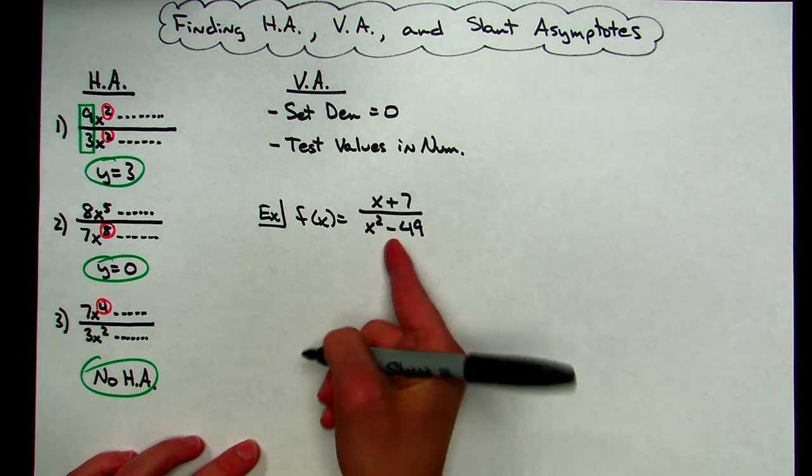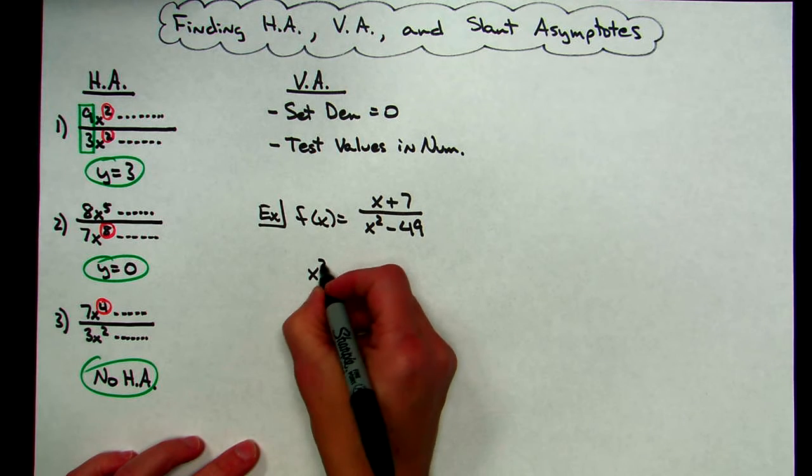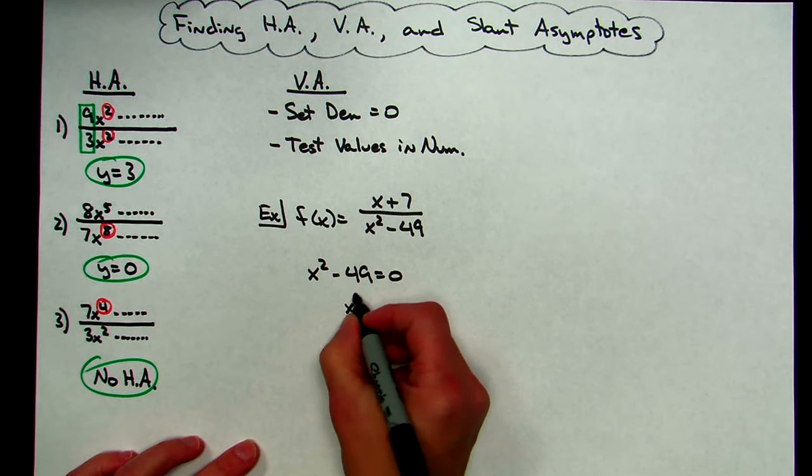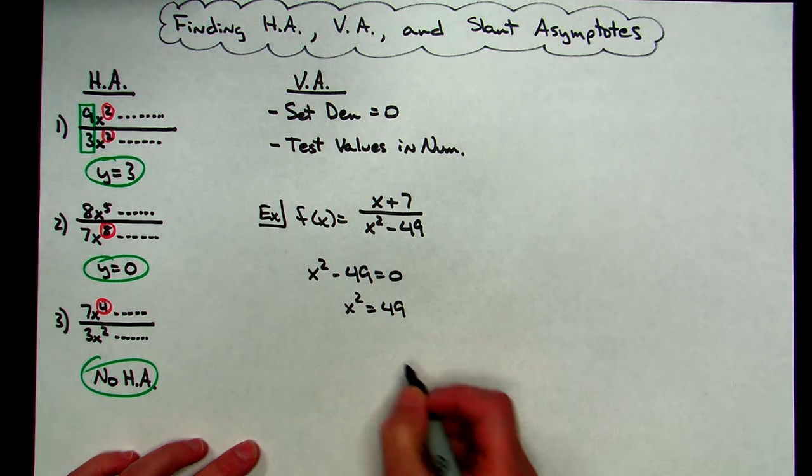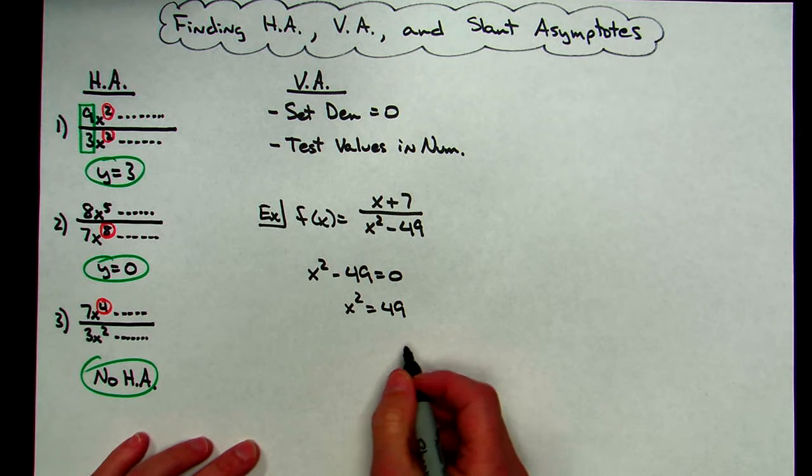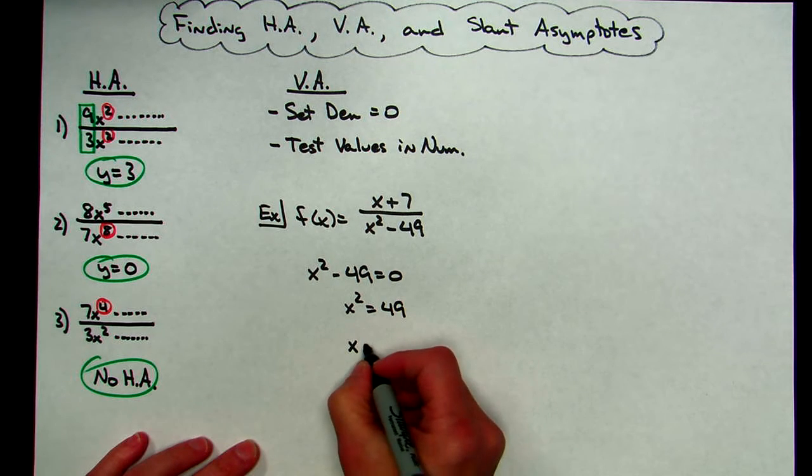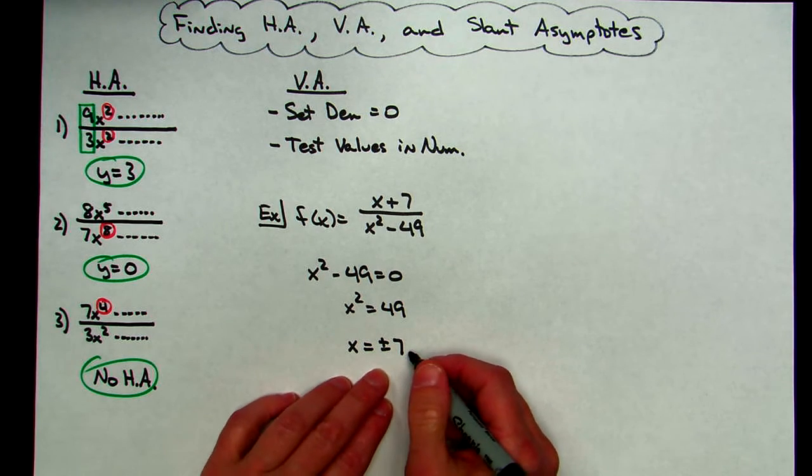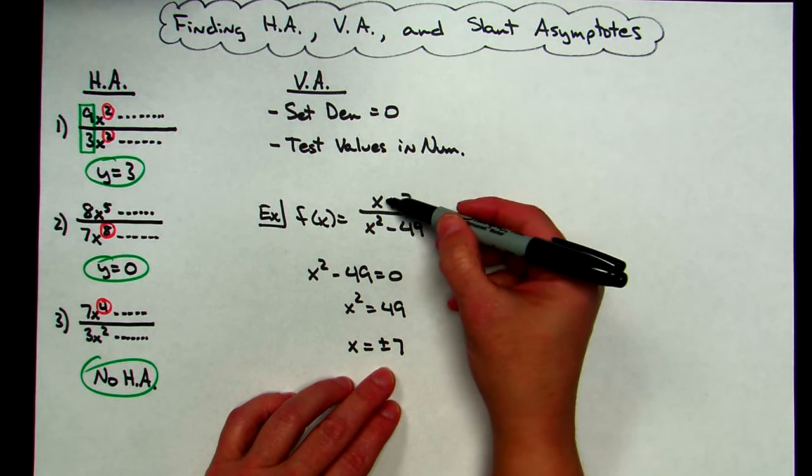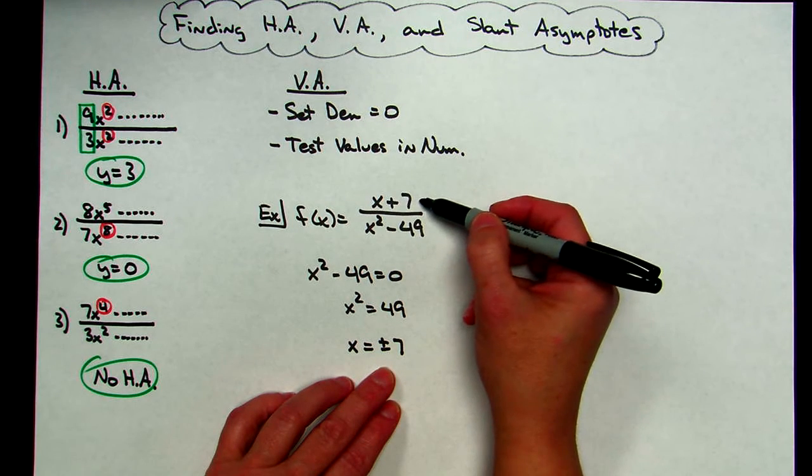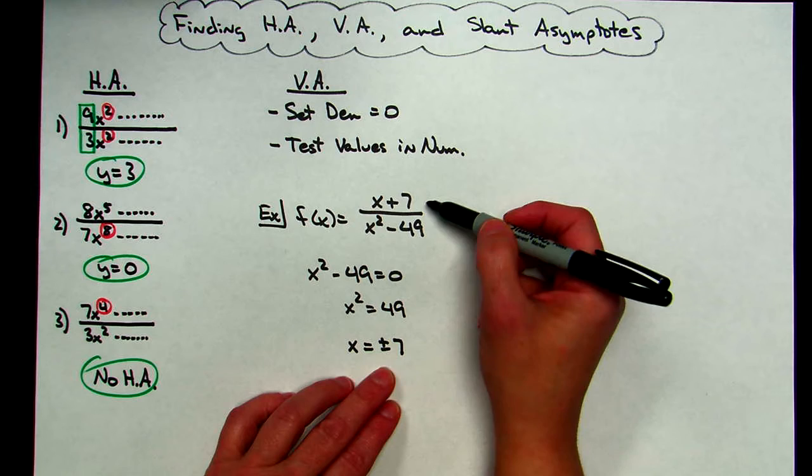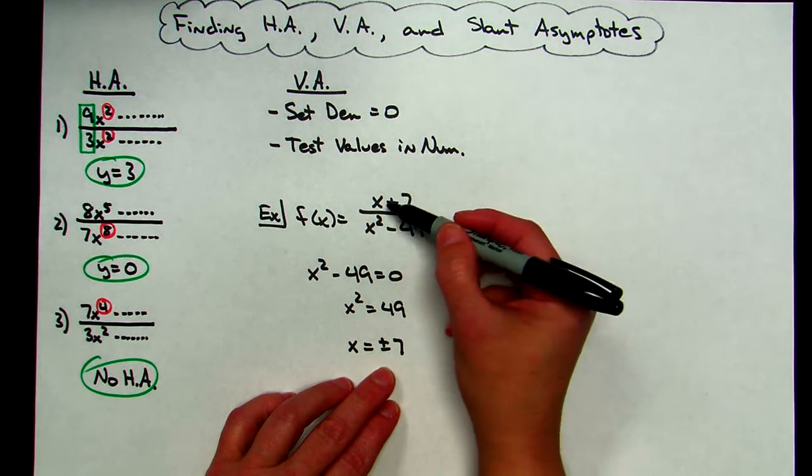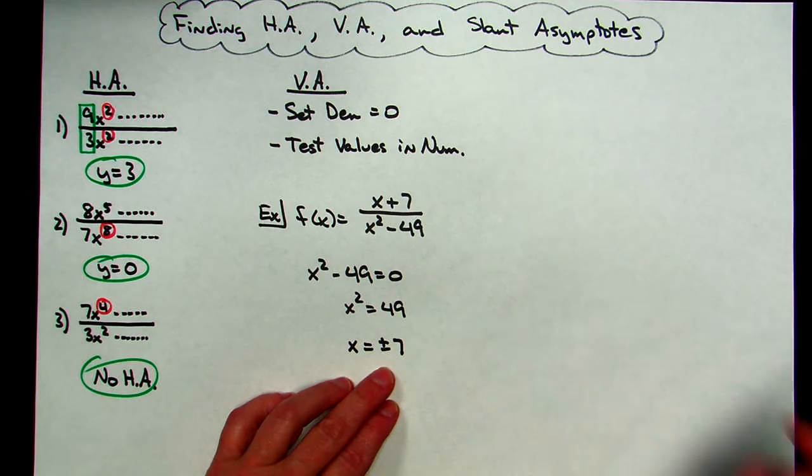So I'm going to take my denominator, x squared minus 49, set it equal to 0. I'm going to solve, x squared equals 49. Now I'm going to remember, when I take square root of both sides, I've got to do plus or minus. So x equals plus or minus 7. So I have two possibilities here for my vertical asymptotes. Now I'm going to take positive 7, I'm going to plug it back into this numerator. 7 plus 7 is 14, so I am good to go there. I'm going to now test the bottom one, negative 7. When I put negative 7 back in, negative 7 plus 7 gives me a 0.